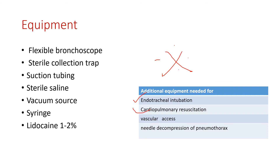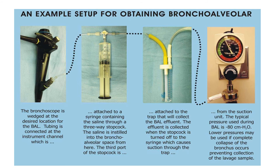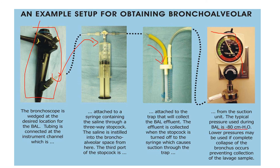Emergency equipment that should be kept available includes endotracheal intubation supplies, CPR and resuscitation equipment, vascular access, and needle decompression for pneumothorax. The bronchoscope port is connected to a syringe on one end and the other end to the specimen trap for collection of bronchoalveolar lavage fluid. The suction apparatus is set at minus 80 centimeters of water; lower pressure may be used if complete collapse of the bronchoscope is preventing collection.